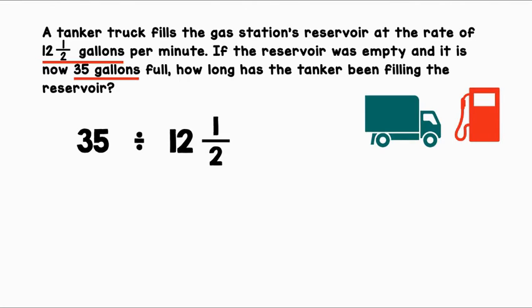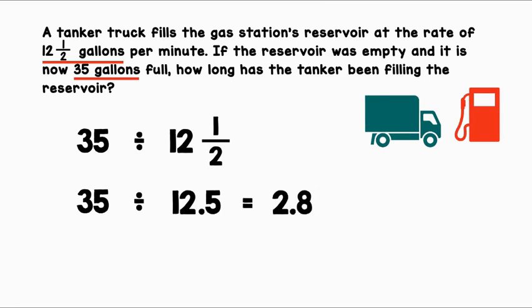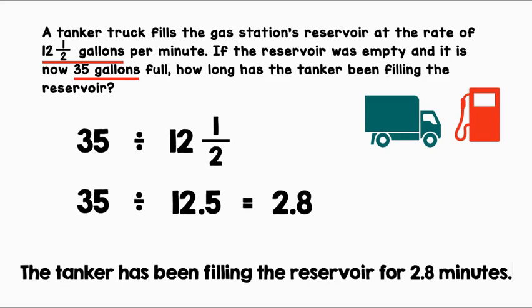I have a whole number and a mixed number. I'm going to choose to make the mixed number a decimal. So we have 35 divided by 12.5, since 1 divided by 2 is 0.5. When we divide these two numbers, we get 2.8. The tanker has been filling the reservoir for 2.8 minutes.